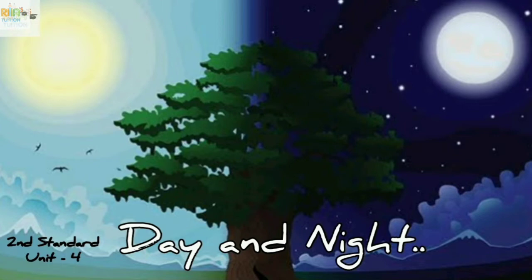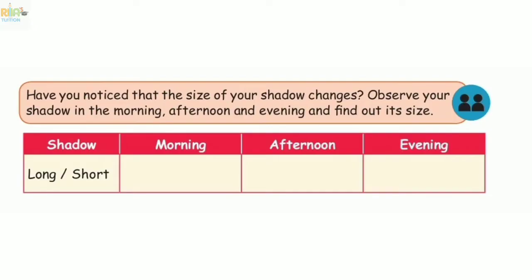In the previous class we saw the lesson. In this class we will see the evaluation. So first we will see the activity. Let's go to the first activity. Have you noticed that the size of your shadow changes? Observe your shadow in the morning, afternoon and evening, and find out its size — whether the shadow is long or short.